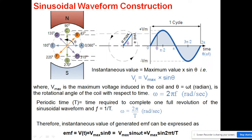So we are at V_max. The instantaneous value is the maximum value multiplied by sin(θ), where theta is this angular variation. In electrical engineering we use electrical degrees, which I discussed in my previous classes on the three-phase induction motor.